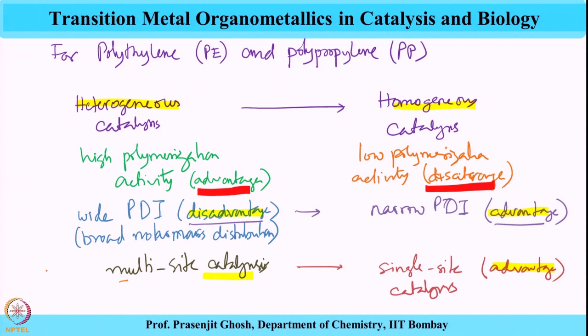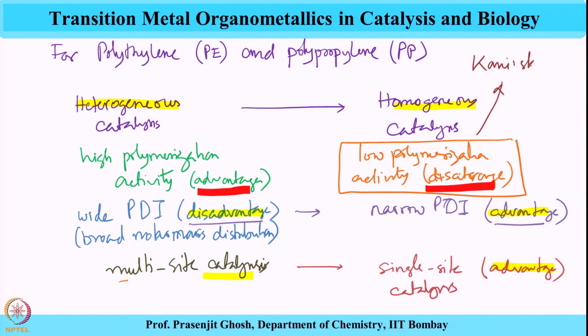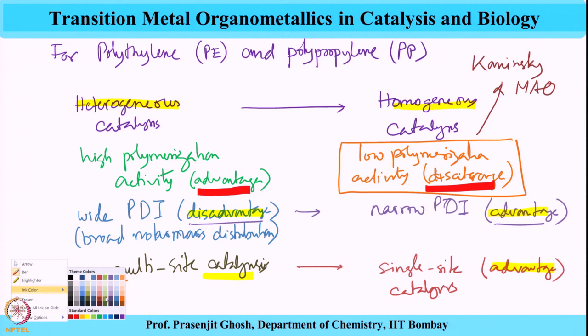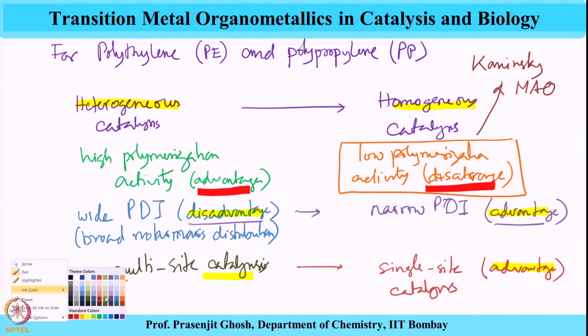This disadvantage was finally overcome by the work of Kaminsky, who brought about the advent of methylaluminoxane (MAO), and then subsequent improvisation by Marks using a boron tris(pentafluorophenyl) — B(C6F5)3 — reagent. This disadvantage of low activity was finally overcome to get homogeneous catalysts with extremely high activity.